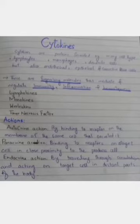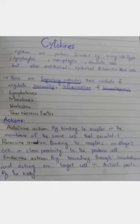Actions of cytokines: autocrine action, paracrine action, and endocrine action. Autocrine action means that the cells from which cytokines are released have a receptor and bind the cytokines back into the same cell. That action is known as autocrine action — binding to the receptors on the membrane of the same cell that secreted it.